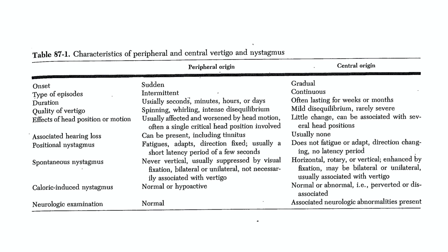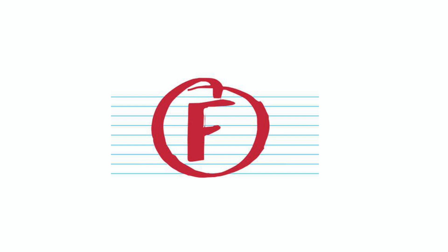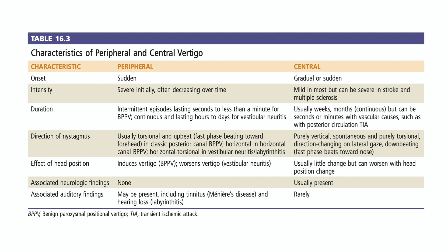Caloric-induced nystagmus: I'm not sure there's an emergency physician in the history of the world that ever tested a patient with calorics, and it's now pretty much obsolete even for vertigo experts. Neurologic examination: we had to wade through a lot of nonsense for a nugget of half-truth. Patients with peripheral vertigo should not have any new neurologic deficits — yes. But the whole reason we have HINTS is to catch the subtle posterior circulation stroke where you can't find neurologic deficits on exam except for a HINTS central finding. So again, this is misleading you into missing a stroke. Overall, this table gets an F — but of course it was written over 38 years ago. So how far have we come in the intervening decades?